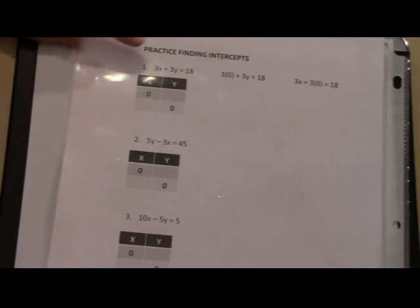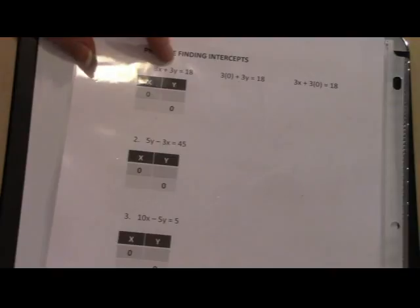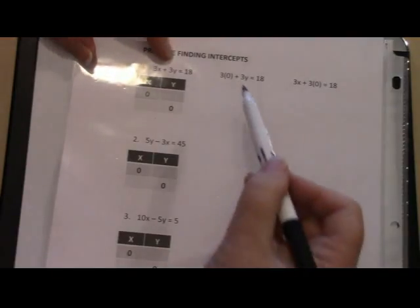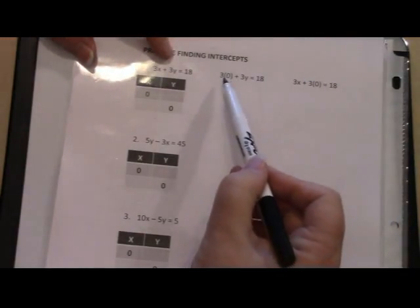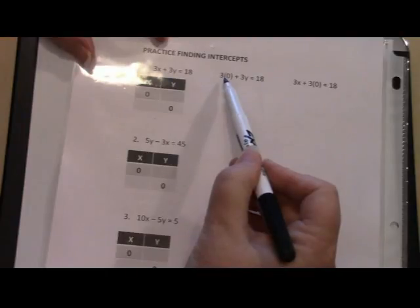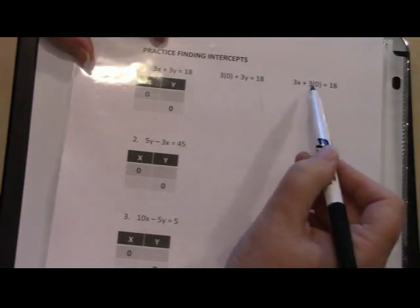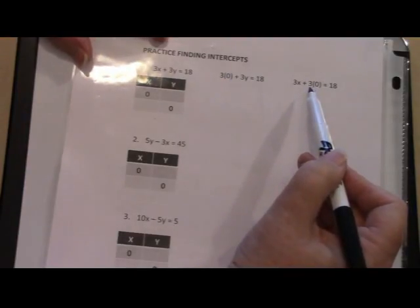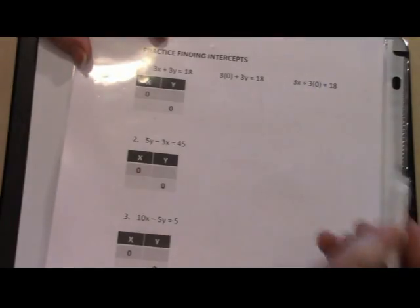Let's turn to the next page and we'll do some practice problems together. Our first equation here is 3x plus 3y equals 18. We're going to do it twice. Our first equation here, we have 0 in the x position. Our second position, we have 0 in the y position.